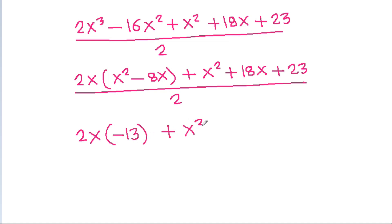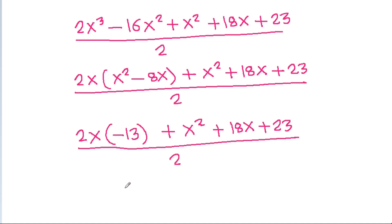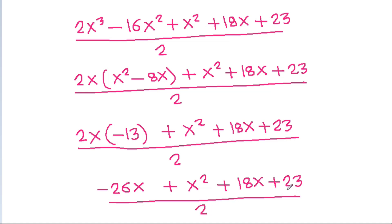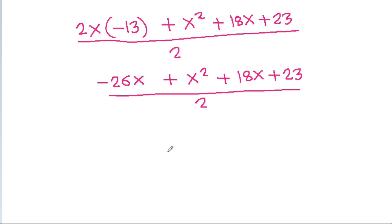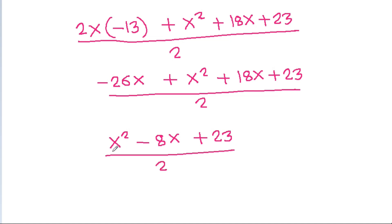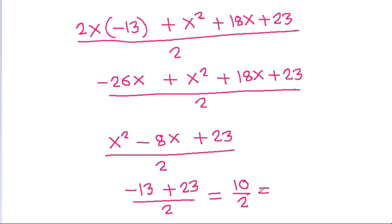So it is minus x square minus 18x minus 23, by 2. And x square minus 8x is minus 13, minus 23, by 2, and it is 10 by 2, that is equal to 5. So the answer is 5.